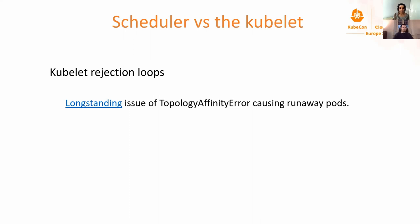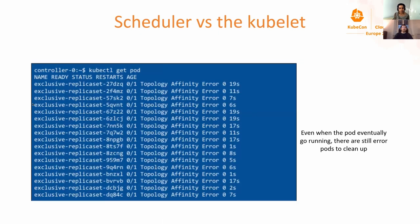The second pain point is related to the kubelet rejection loop. If a pod is part of a deployment or replica set and we have the topology manager configured with a single NUMA node policy, we can end up with a runaway pod creation. Since nothing has changed on the node from a resource perspective and the pod has failed at admission time, the subsequent pods created by the replica set controller end up being placed on the same node with the same fate. The pods that fail continue to exist on the cluster itself.